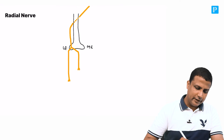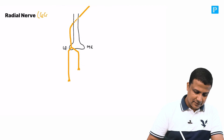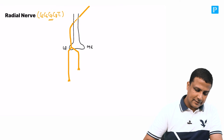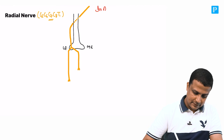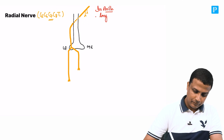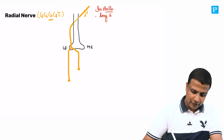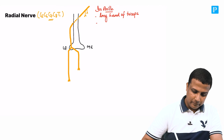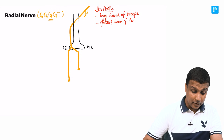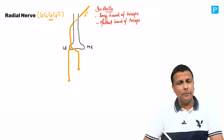The root value of the radial nerve is C5, C6, C7, C8, and T1. In the axilla, the radial nerve supplies the long head of triceps and also the medial head of triceps — but remember, it is not supplying the entire medial head of triceps, only a part of it.